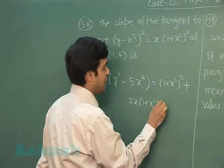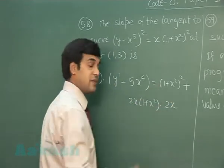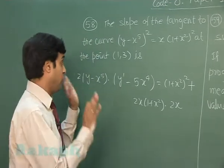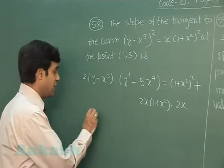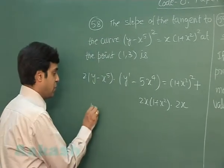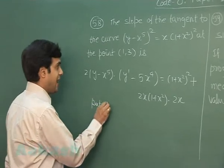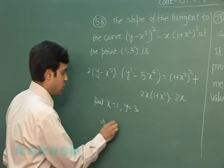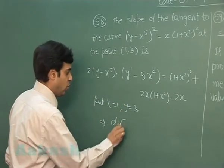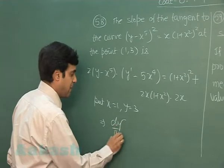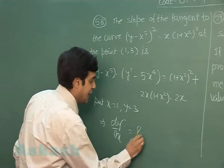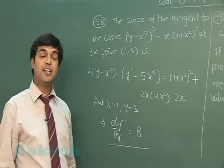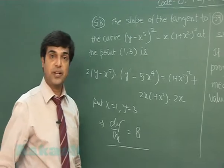Now we need the slope at (1, 3). Simply put x = 1, y = 3 to get the slope dy/dx as 8. Let's move to the next question, that is question 59.